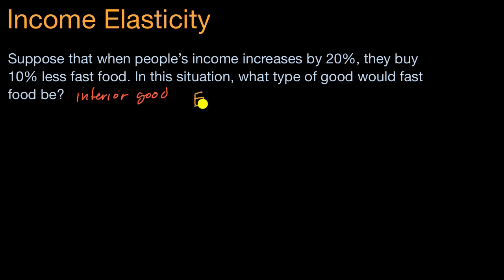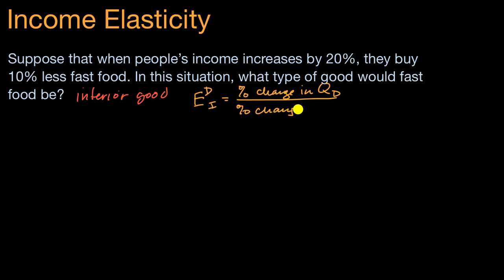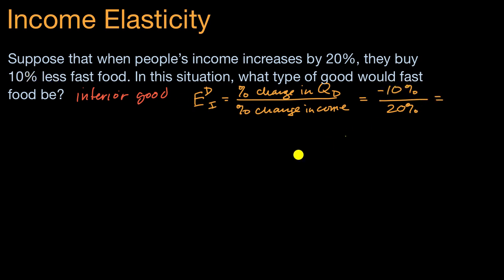Our income elasticity of demand is just going to be our percent change in quantity demanded divided by our percent change in income. Our percent change in income went up by 20%, and what happened to our quantity demanded? It went down by 10%, so negative 10%. And so here, you have an income elasticity of demand of negative 0.5.